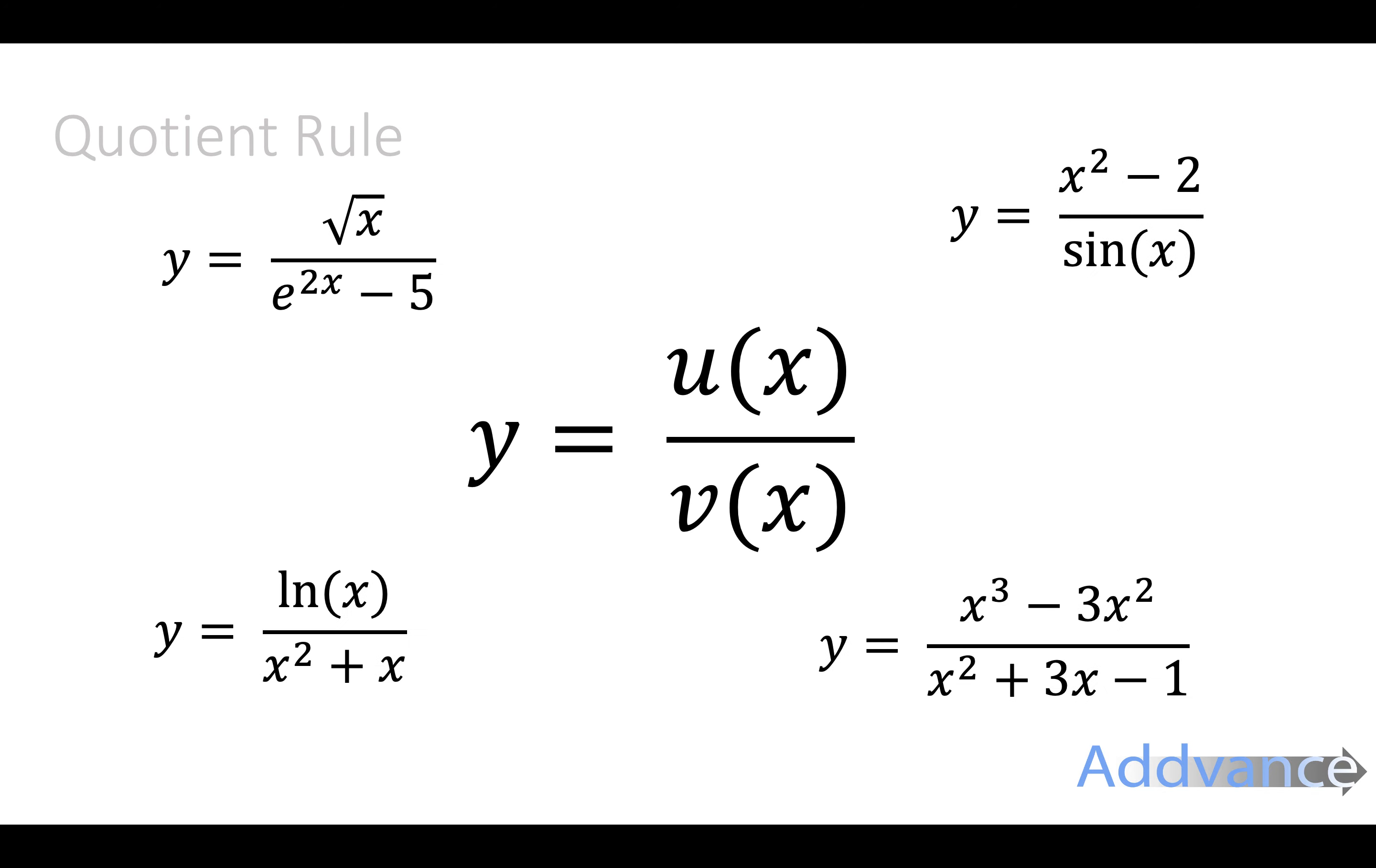These are some examples so all of these are a function divided by a function. Where the number on top, the function on top, is highlighted in green and the function on the bottom is highlighted in red. The one on top is called u, the one on the bottom is called v.